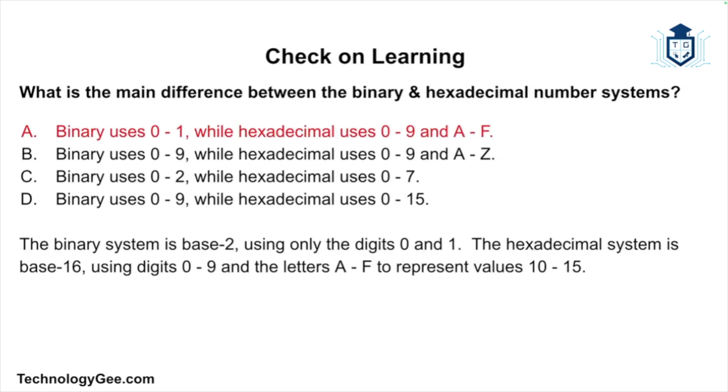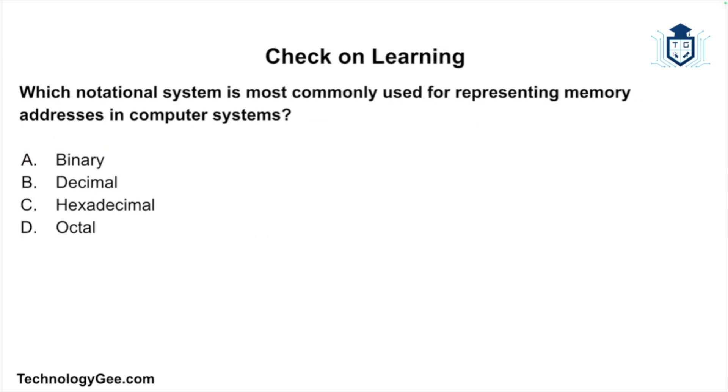The correct answer would be A. The binary system is base 2 using only digits 0 and 1. The hexadecimal system is base 16, using digits 0 through 9 and the letters A through F to represent values 10 through 15.